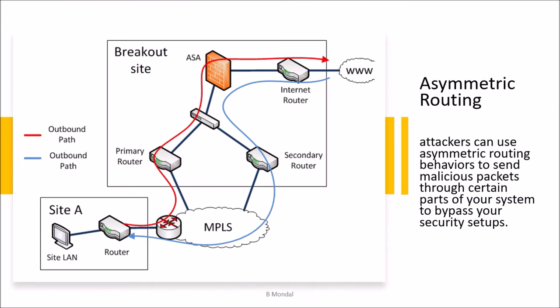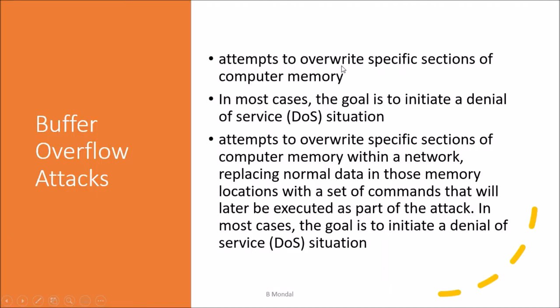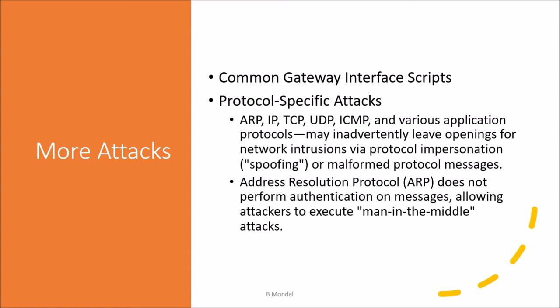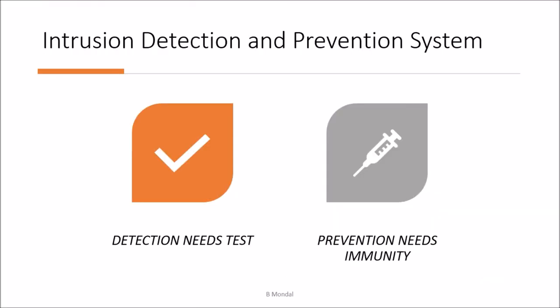Attacks may include asymmetric routing, where requests are sent through one path and received through another. There can also be buffer overflow attacks, frozen attacks, planning attacks, traffic flooding attacks, CGI script attacks, or protocol-specific attacks. Whatever protocols are activated on the system, they have their own pros and cons regarding security.